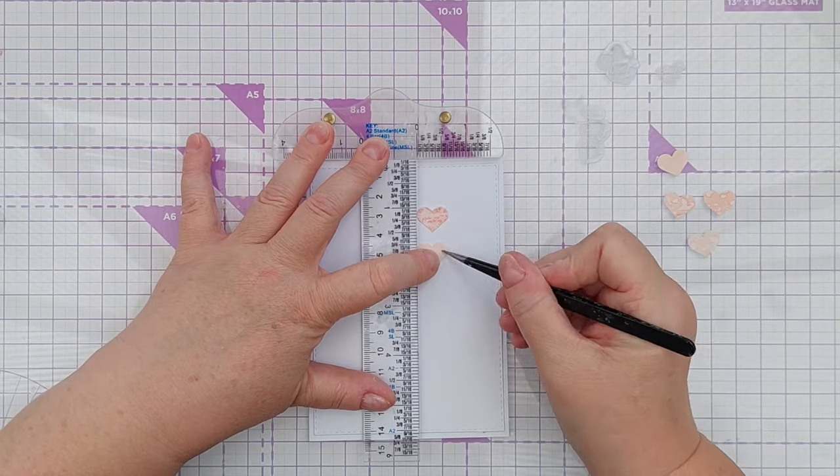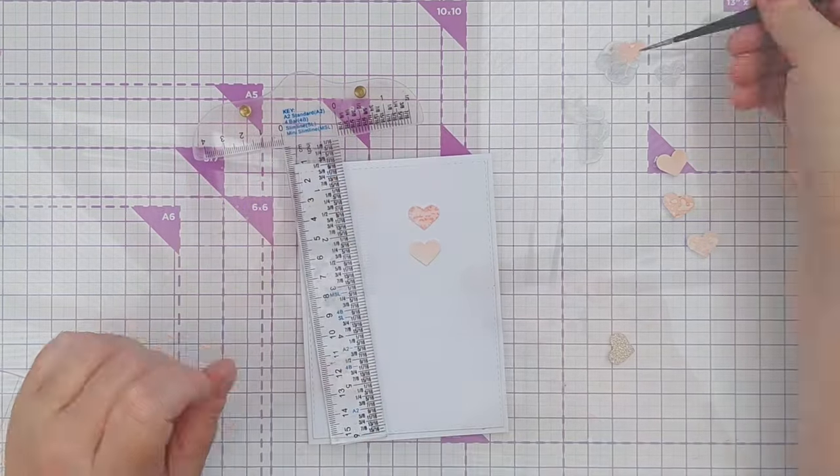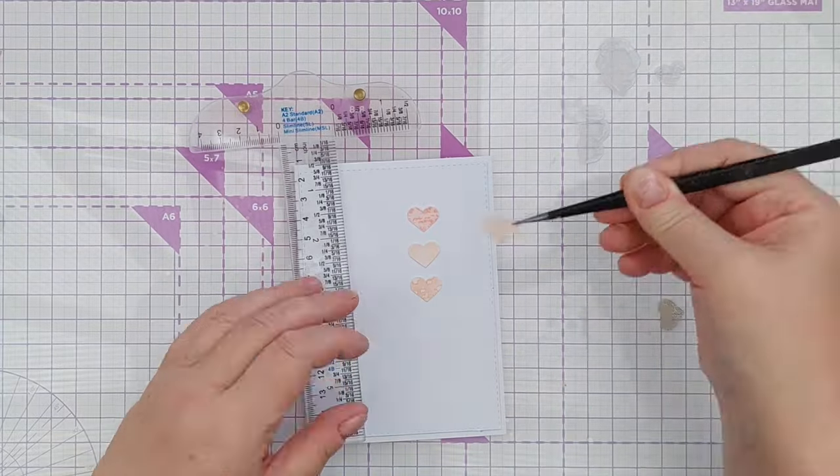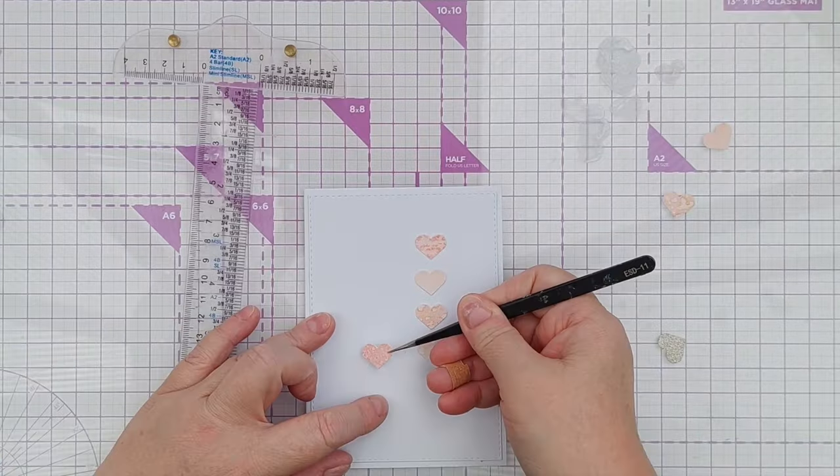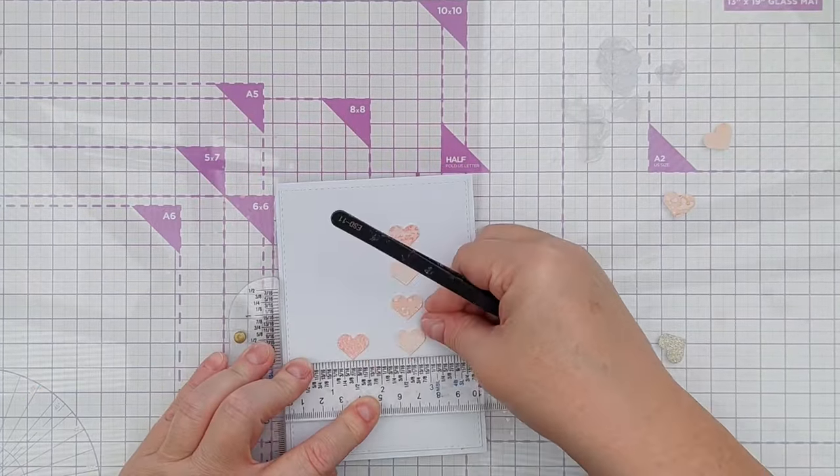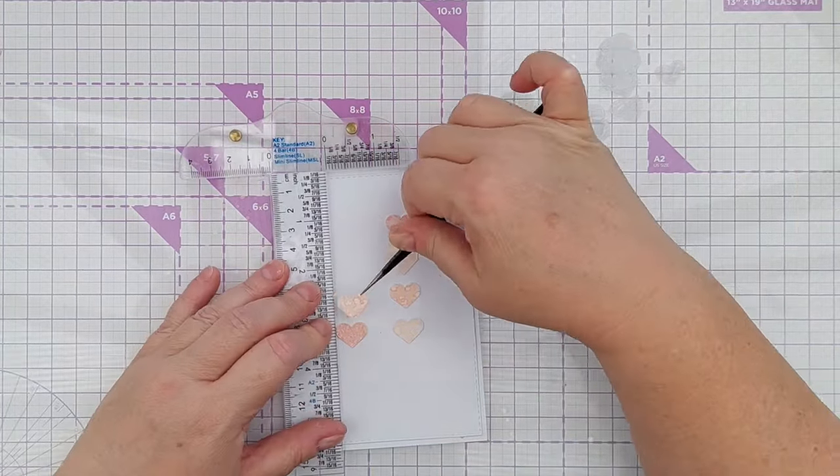Once I had my orange and gold hearts I used matte gel medium to stick them to the front of a card blank. For my first card I decided to do two columns of four hearts with just one gold heart. I did use my ruler to find the middle point of the card and then to help me line up the hearts nice and straight.